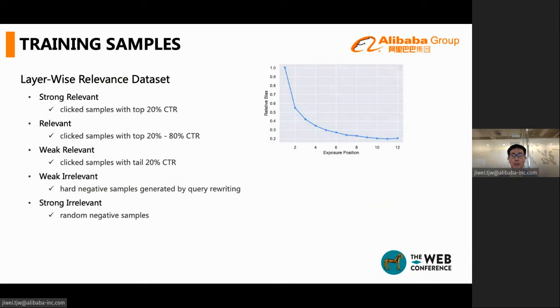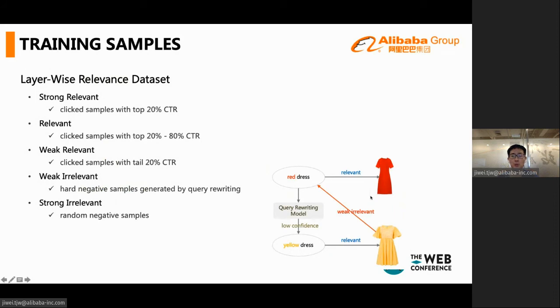A query rewriting model aims to generate candidates for a query with the same intent. But we can take the candidates of low confidence. This low confidence usually changes the intent of the original query. For example, here, the original query is red dress, and the low confidence rewritten query is yellow dress. The product clicked under the yellow dress will mostly be irrelevant to the original red dress query. The samples constructed in this way are quite similar to real online difficult negatives.